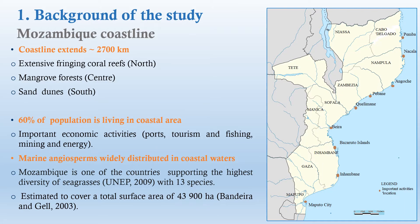In Mozambique, the coastline extends over approximately 2,700 kilometers, and it's characterized by extensive fringing coral reefs and rock limestone in the north, several mangrove forests in the center, and sand dunes in the south. 6% of the country's population is living in coastal areas, and much of the country's economic activities, such as ports, tourism, fishing, mining, and energy, are located in the coastal zone.